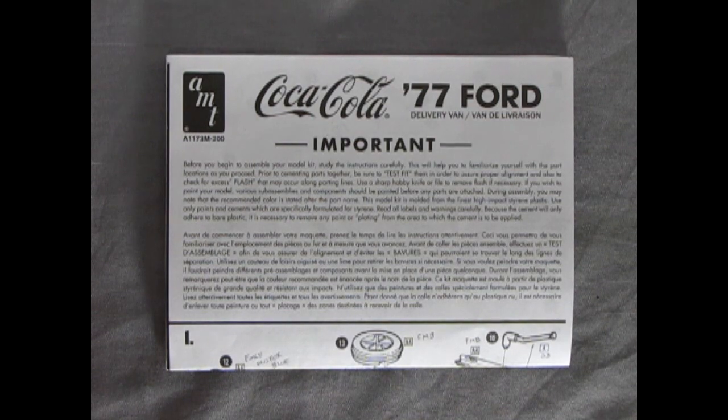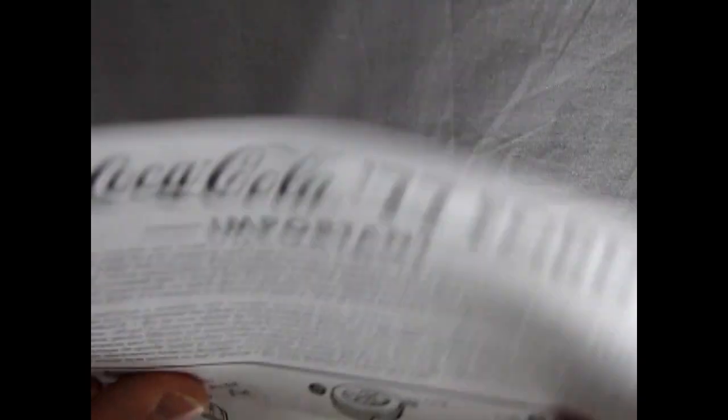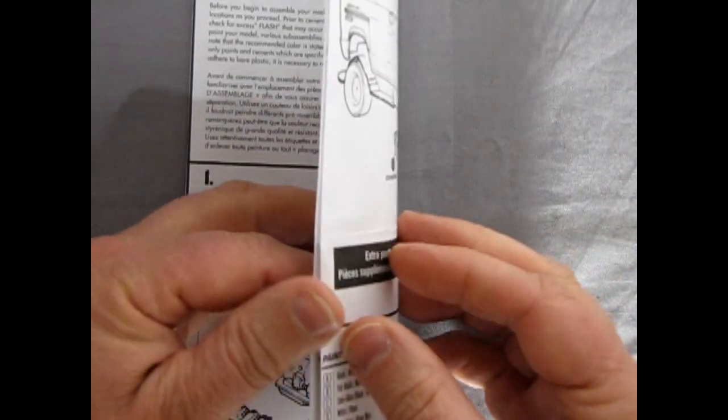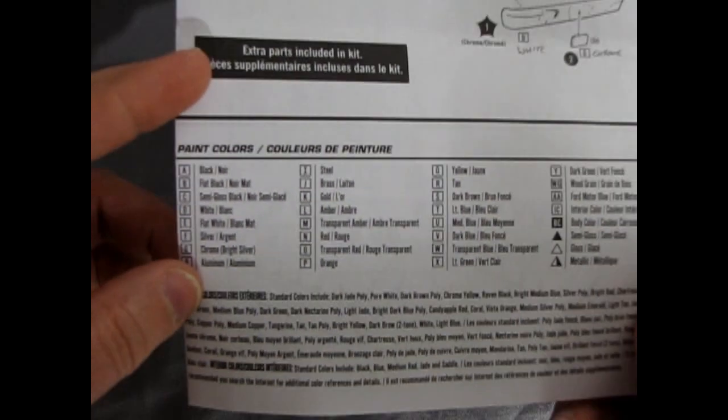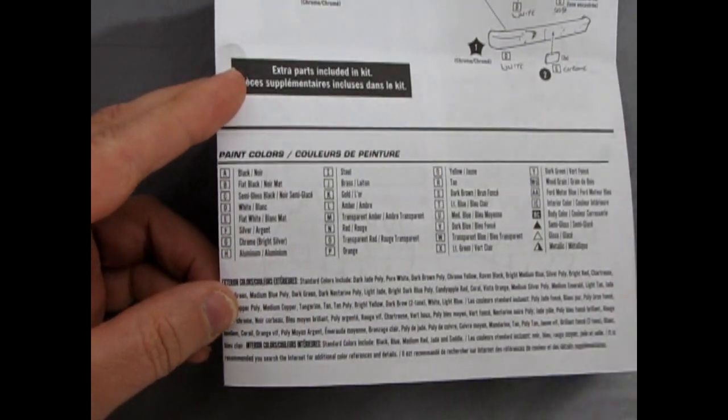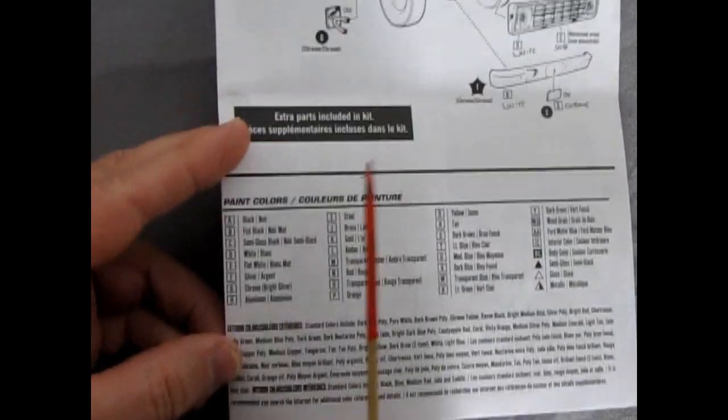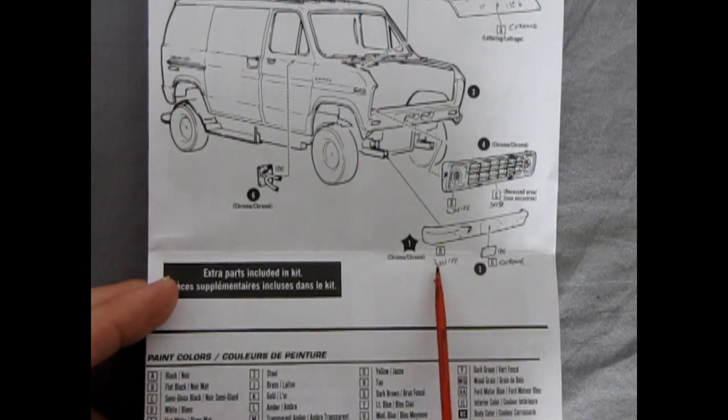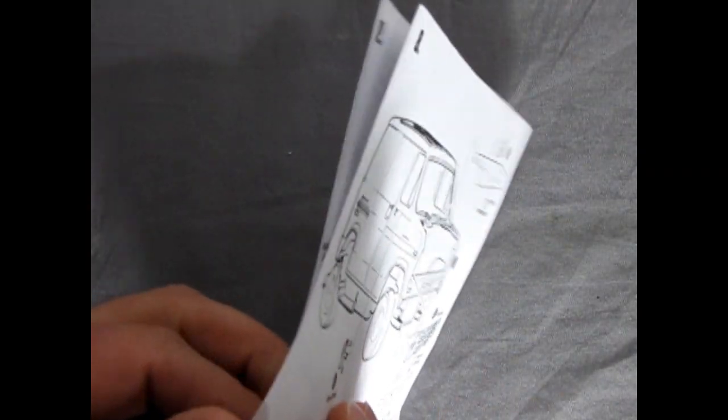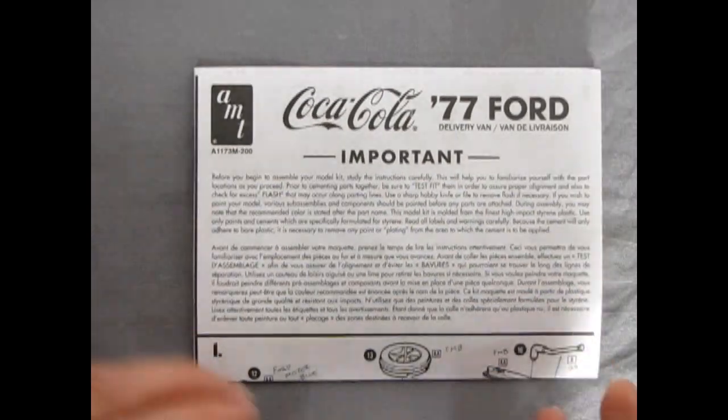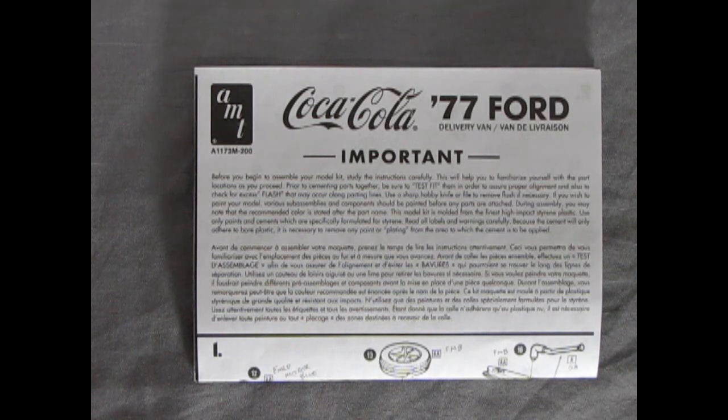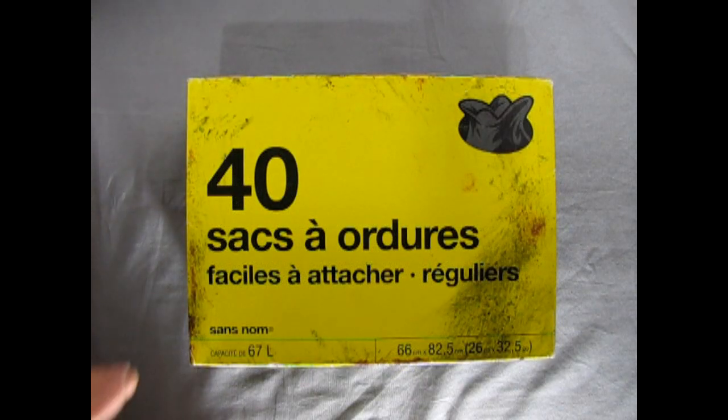So the first thing we need to do Danny is now that we have all the parts loose, we have to figure out what colors to paint them. So what I've done here is I've gone in and opened up the instruction sheet over to that paint chart right there. And as you can see each of the colors is represented by a letter on our instruction sheet here. So what I've done is I've gone through and I've marked down what parts are painted what color. So what we will do here is find all the parts that are in the box and get them all arranged into whatever color we're going to paint them.